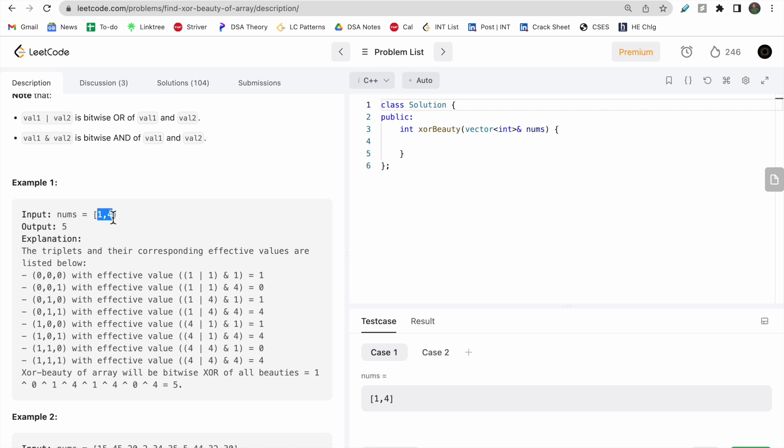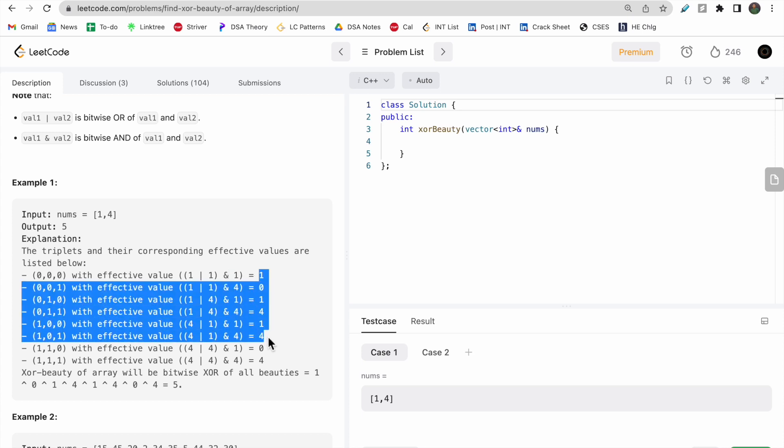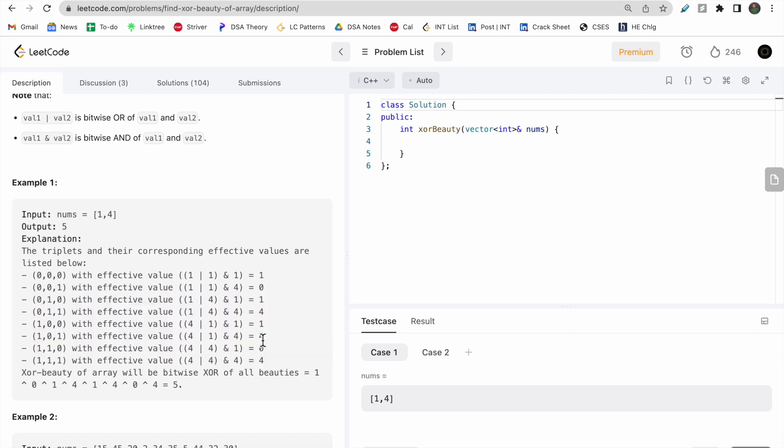Let's look at the first test case with nums containing 1 and 4. We can take triplets like (0,0,0) and combinations with indices 0 and 1. We find the beauty by taking bitwise OR and then bitwise AND, then take the XOR of all these beauties to get our answer.